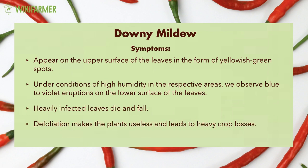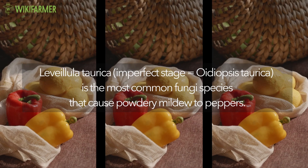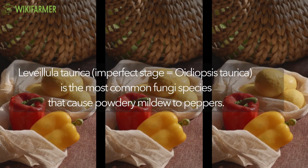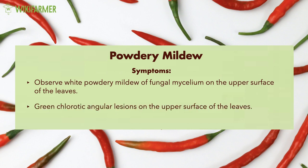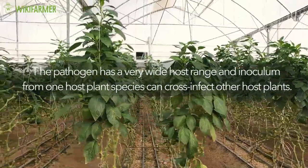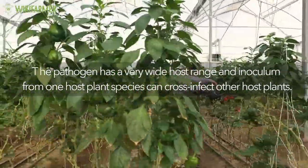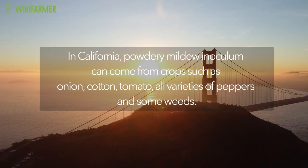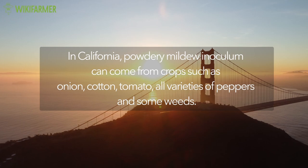Defoliation makes the plants useless and leads to heavy crop losses. Powdery Mildew. Leveillula taurica is the most common fungi species that causes powdery mildew to peppers. We may observe white powdery mildew or fungal mycelium on the upper surface of the leaves. Symptoms may also include green chlorotic angular lesions on the upper surface of the leaves. We must always disinfect our tools after handling an infected plant in order to prevent the infection from spreading to healthy plants. Unfortunately, the pathogen has a very wide host range and inoculum from one host plant species can cross-infect other host plants. In California, powdery mildew inoculum can come from crops such as onion, cotton, tomato, all varieties of peppers and some weeds.